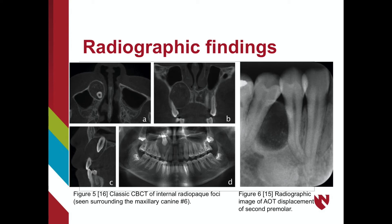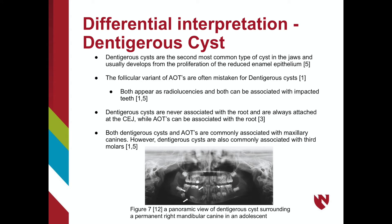The dentigerous cyst is the second most common type of cyst in the jaws and usually develops from the proliferation of the reduced enamel epithelium. The follicular variant of an AOT is often mistaken for a dentigerous cyst because both lesions can appear as radiolucent lesions and both can be associated with impacted teeth. A key difference is that dentigerous cysts are never associated with the root of a tooth and are attached at the CEJ, whereas AOTs can be associated with part of the root and surround a greater part of the tooth crown and root.